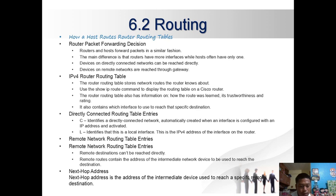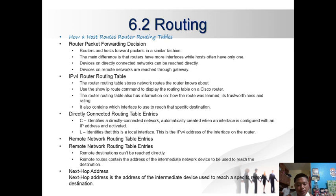Remote network routing table entries: a remote destination cannot be reached directly. The route contains the IP address of the intermediate network device used to reach the destination. The next-hop address is the address of the intermediate device used to reach the specific remote destination.